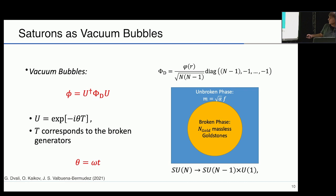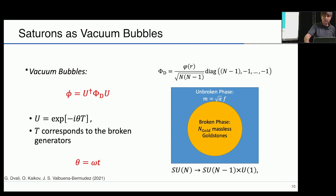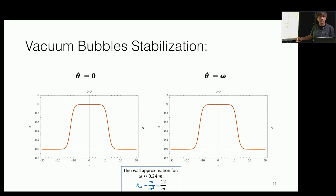The Goldstone modes internally in the isospace — depending on whether the bubble carries an information pattern or not — are time-dependent or not. That is what backreacts and changes the behavior of the profile function.